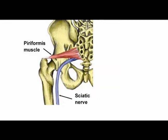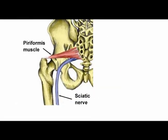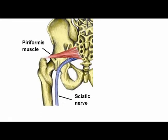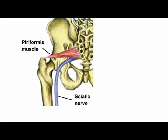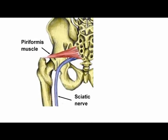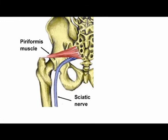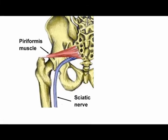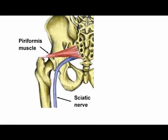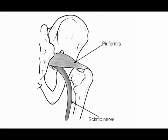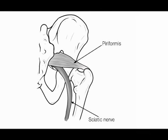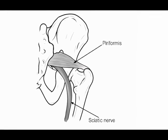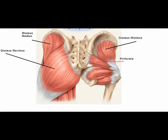Part of it is located in the pelvis against the posterior wall, and when it exits the pelvis, it is located in the posterior hip. The sciatic nerve runs directly underneath the piriformis muscle.